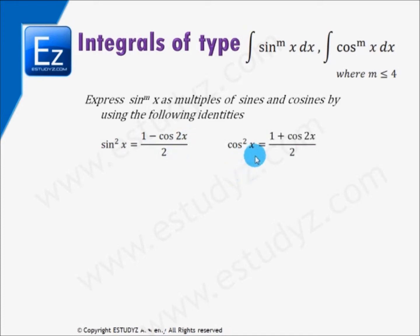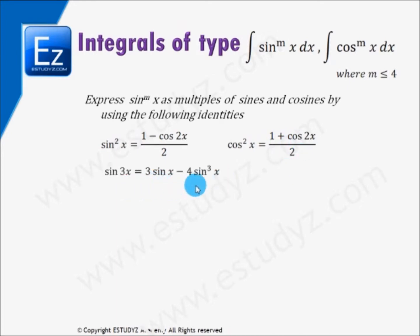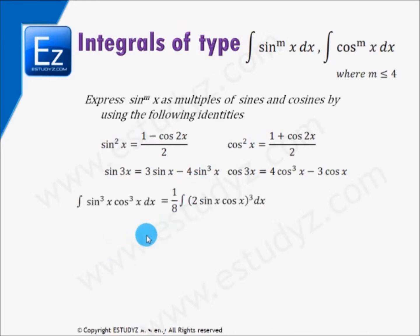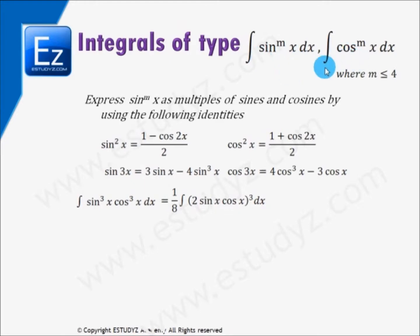The identities are: sin²x = (1 − cos 2x)/2; cos²x = (1 + cos 2x)/2; sin 3x = 3 sin x − 4 sin³x; and cos 3x = 4 cos³x − 3 cos x. These are only applicable for m ≤ 4. Let us take an example: the integral of sin³x · cos³x dx.